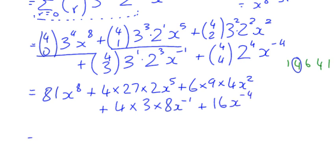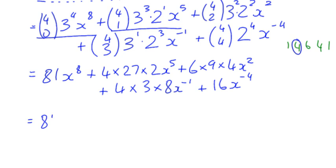And one last line simplifying all of that: 81x to the power of 8, 4 times 27 is 108 times 2 is 216x to the 5. My third term, 6 times 9 times 4, 6 times 9 is 54 times 4 is 216x². My x to the negative 1 term, 4 times 3 times 8 is 96. I'm going to put my x as a positive index on the bottom of the fraction. And I've got plus 16 over x to the 4.